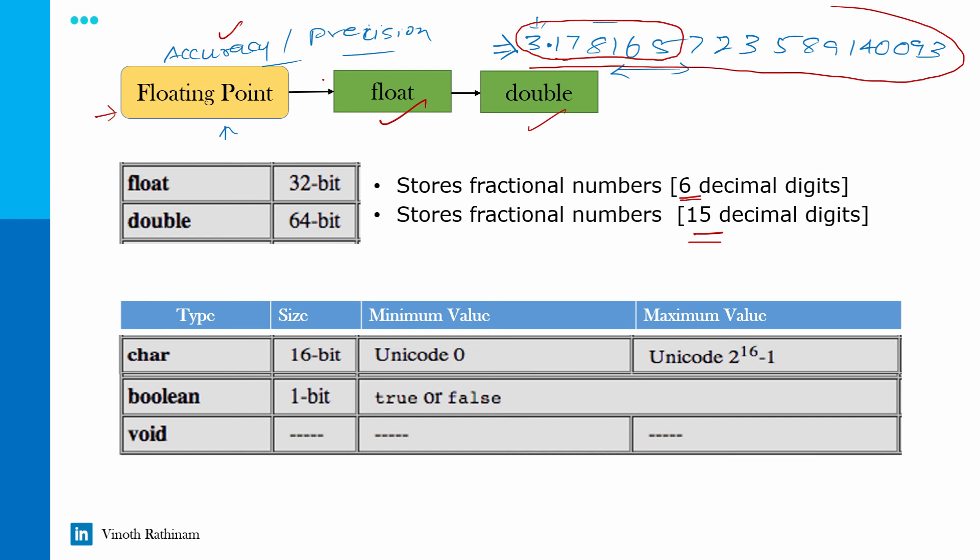Integer talks about the range of number and floating point talks about the accuracy or precision of the number. So based on your requirement, you have to choose the respective data type.